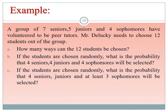Probability calculation example using combinations: a group of 11 seniors, 5 juniors, and 4 sophomores volunteered. 12 students need to be chosen. Without any restriction, the number of ways to choose 12 from 16 is 16C12. If the students are chosen randomly, the probability of selecting exactly 4 seniors is: numerator = 7C4 × 5C4 × 4C4, denominator = 16C12.